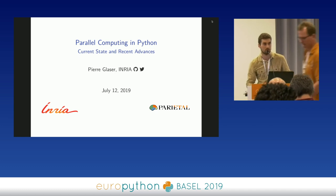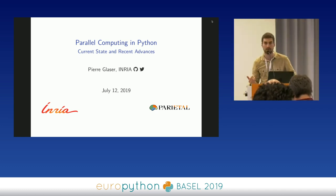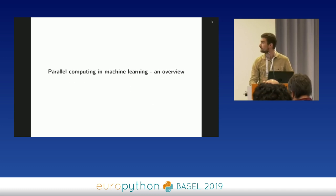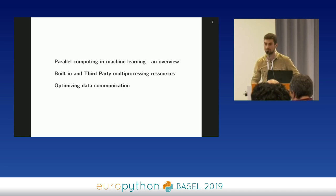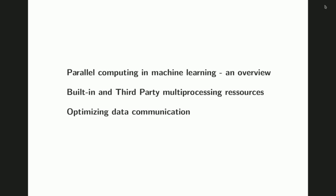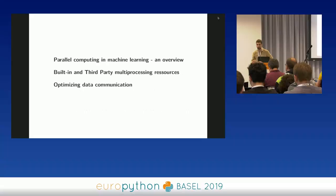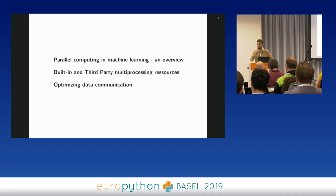I'm going to talk about how we collaborated with the whole ecosystem — Dask, Python, and a bunch of other libraries — to make multiprocessing and multi-machine computation faster for everyone. The first section will be a walkthrough about why parallel processing is important in machine learning. The second part is a catalog of the different libraries that do multiprocessing that scikit-learn uses. The last part covers the most bleeding-edge advances we pushed forward in Python 3.8.